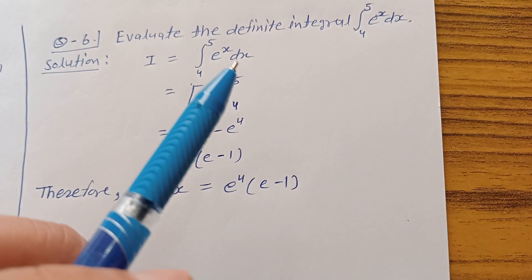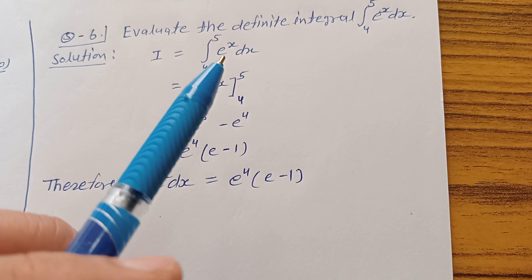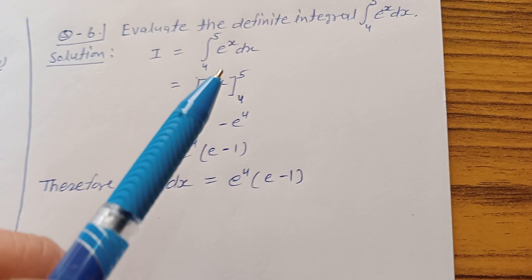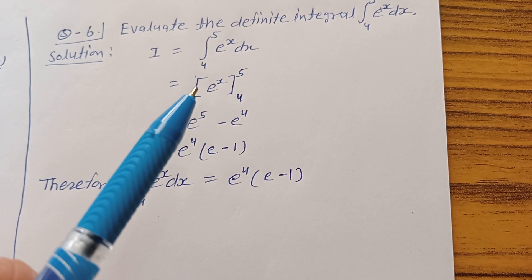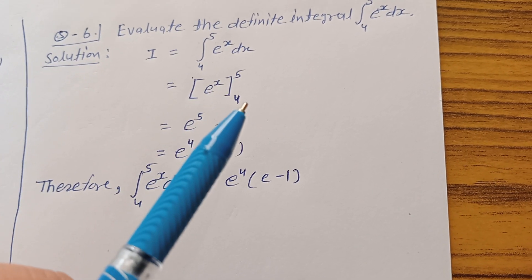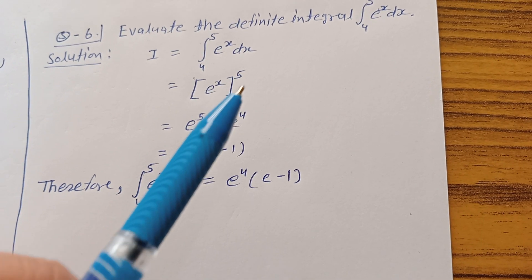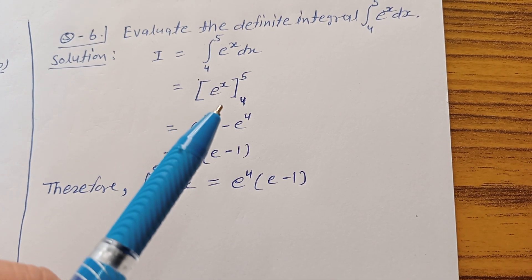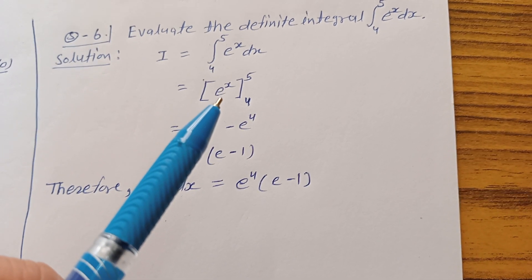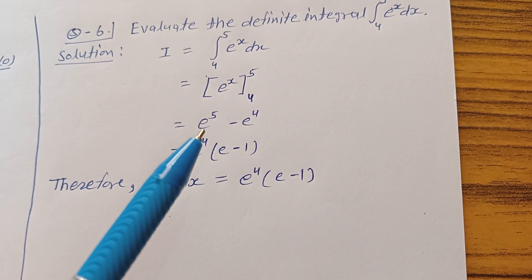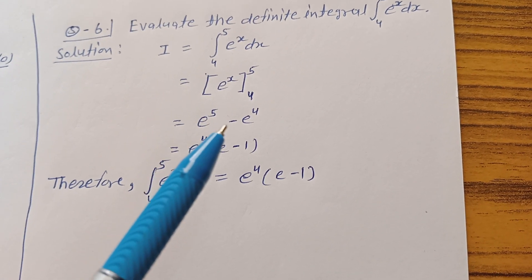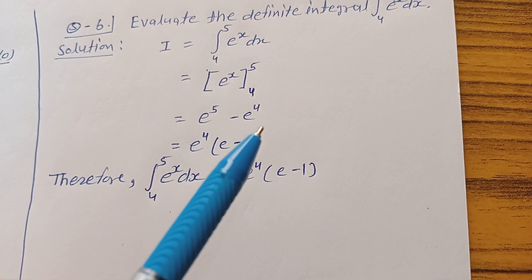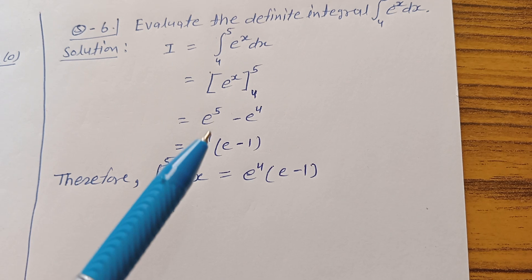Integration of e power of x is e power of x, so I is equal to bracket e power of x with limit 4 to 5. Put the limits inside the bracket: upper limit minus lower limit, so I is equal to e power of 5 minus e power of 4.